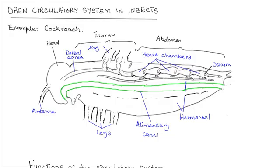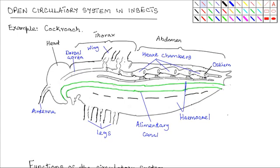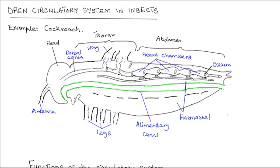We will look at the open circulatory system of insects, in particular using the cockroach as an example of an insect that has an open circulatory system.